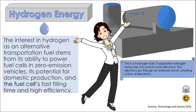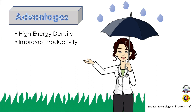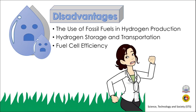Next is hydrogen energy. The interest in hydrogen as an alternative transportation fuel stems from its ability to power fuel cells in zero-emission vehicles, its potential for domestic production, and fuel cells' fast filling time and high efficiency. The advantage is that it has high energy density and improves productivity. The disadvantages include the utilization of fossil fuels in hydrogen production, challenges with hydrogen storage and transportation, as well as fuel cell efficiency.